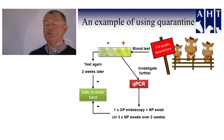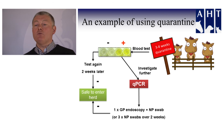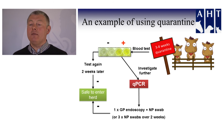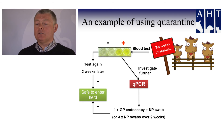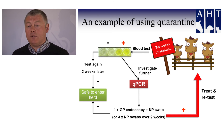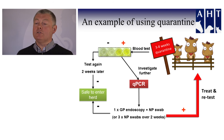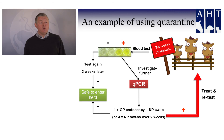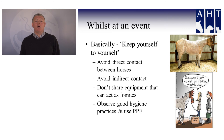If they come back positive on the first blood test, we need to investigate further. That blood test is just telling us they have antibodies against the organism — they may not be harbouring it, but we can't take that risk. So we do further tests: we scope their guttural pouches, take nasopharyngeal swabs, and conduct a highly sensitive PCR test. If they're negative, they're safe to enter the herd. But if positive, we've averted a disaster by detecting these carrier animals. We treat them, retest, and put them back through the cycle to determine they're not harbouring the organism.